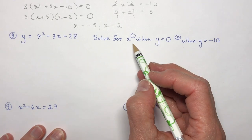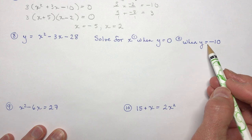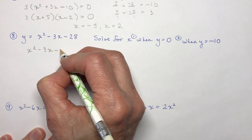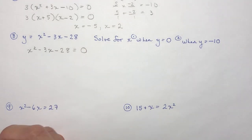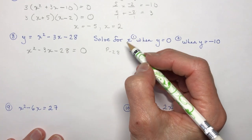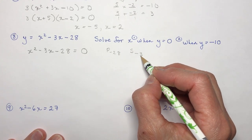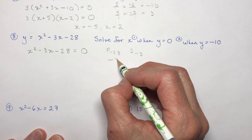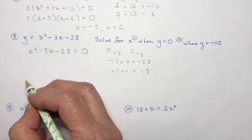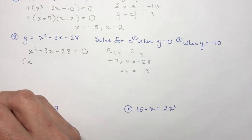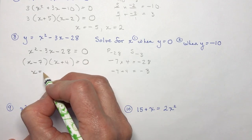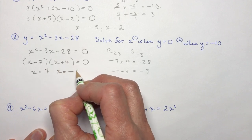Number eight is a little different — it says solve for x when y equals zero and when y equals minus 10. When y equals zero, set the equation equal to zero. I'm looking for a product of minus 28 and a sum of minus 3. Think in sevens: minus 7 times 4 is minus 28, and minus 7 plus 4 is minus 3. The coefficient is 1, so it's a simple trinomial: (x minus 7)(x plus 4) equals zero. So x equals 7 and x equals minus 4.